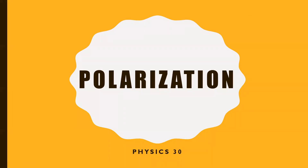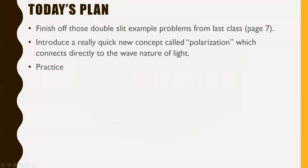Today we're going to have kind of a weird lesson. It's going to continue off what we did yesterday, and then we're going to cover something really quick and really new called polarization today. So we're going to finish off those double-slit examples from last class — that was on page seven of the new part two booklet — then introduce polarization, which connects directly to the wave nature of light, and then give you some practice time.